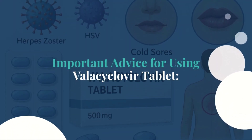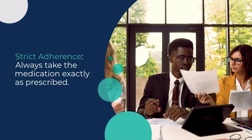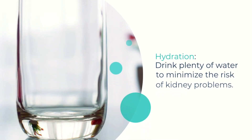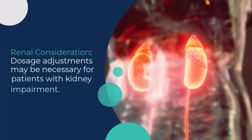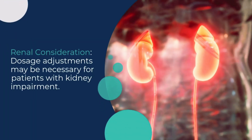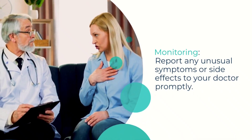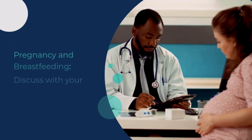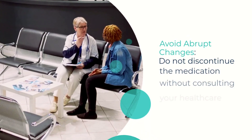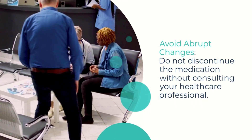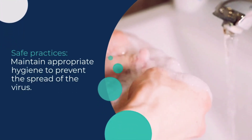Important advice for using valacyclovir tablet. Always take the medication exactly as prescribed and maintain strict adherence. Drink plenty of water to minimize the risk of kidney problems. Dosage adjustments may be necessary for patients with kidney impairment. Report any unusual symptoms or side effects to your doctor promptly. Discuss use during pregnancy and breastfeeding with your healthcare provider. Do not discontinue the medication without consulting your healthcare professional. Maintain appropriate hygiene to prevent the spread of the virus.